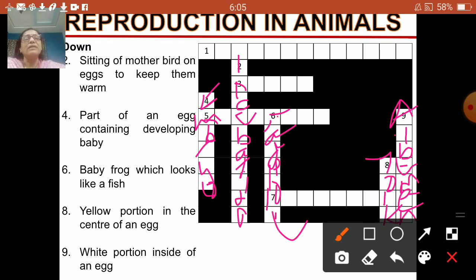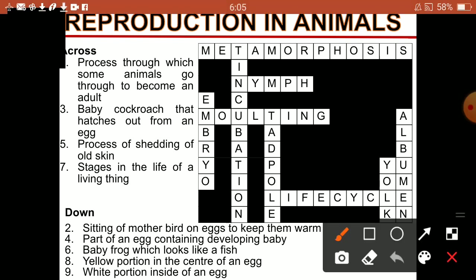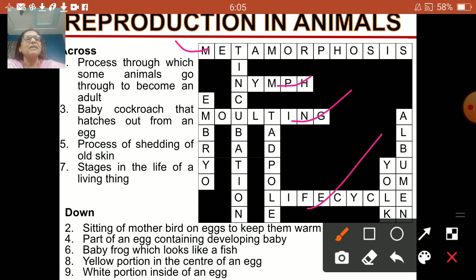Now I am going to show you the answer slide. Number 1 is metamorphosis. Number 3 — baby cockroach that hatches out from an egg — this is nymph. Process of shedding of old skin — this is molting. And stages in the life of a living thing — this is life cycle.